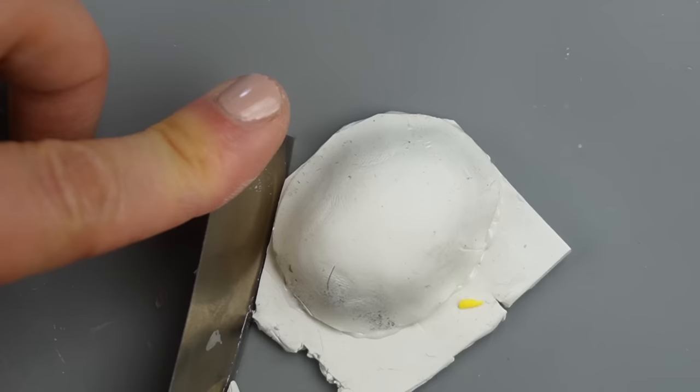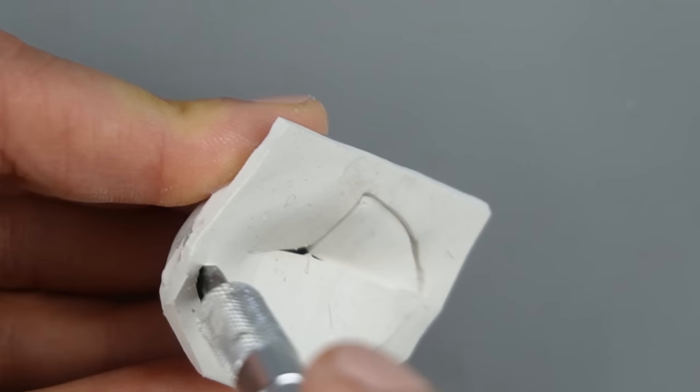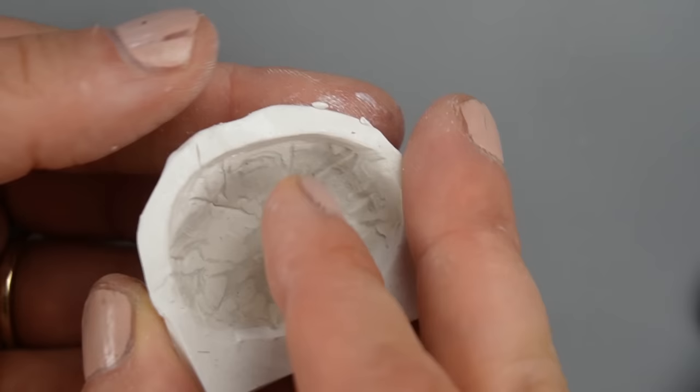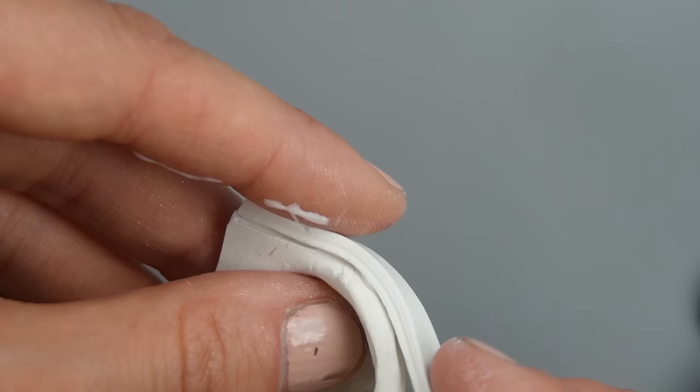I'm using liquid clay to bond the unbaked clay with the baked clay. The first piece I baked is the basin of the sink and the second piece will be the top surface of the sink. I used my finger to smooth the transition between the baked basin and the top of the sink. I used more liquid clay to add a strip across the front to even out the edge.